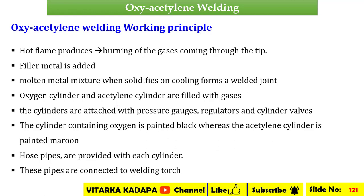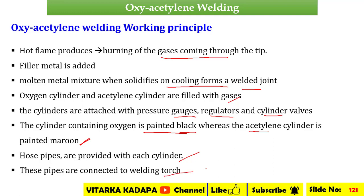The working principle is straightforward: hot flames are produced by the burning of gases coming through the tip. Filler metal is added when needed, and on cooling the molten metal mixture forms a welded joint, which is allowed time to solidify. The oxygen cylinder and acetylene cylinder are filled with gases and attached with pressure gauges, regulators, and cylinder valves. The oxygen cylinder is painted black, while the acetylene cylinder is painted maroon-red. Hose pipes connected to each cylinder are joined to the welding torch.